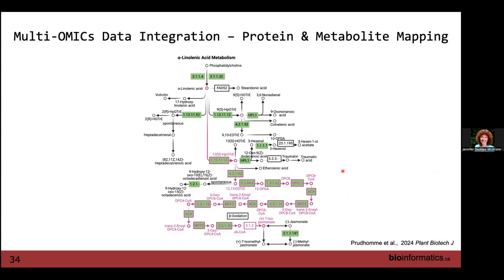Nick had methyl jasmonate as a metabolite that had been produced. He mapped back all proteins in green — proteins identified in this pathway that were higher in abundance — and the metabolite was also produced. It was a nice validation of the dataset from both sides: higher protein production and the metabolite being produced. We can see that throughout the pathway, quite a few of the precursors to get to that metabolite were identified.